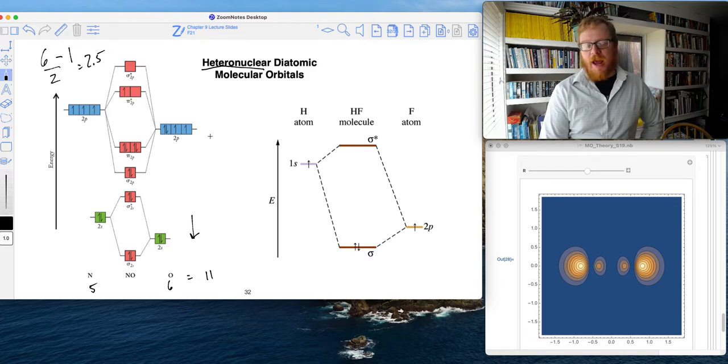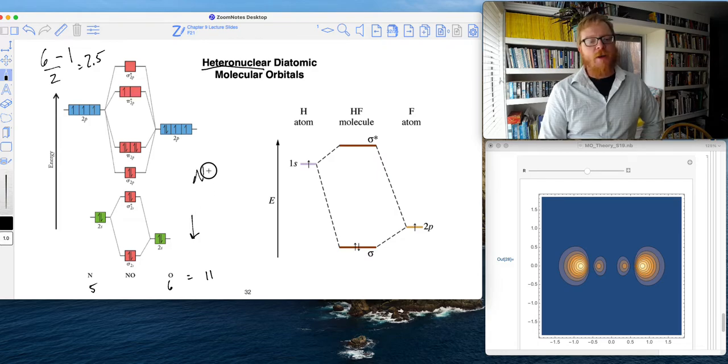Well, what does a 2 and a half bond order look like? Well, remember, if we had used our Lewis structure to predict what this thing would look like, we would get something like this. Let me count correctly here. 2, 4, 6, 8, 10, 11.